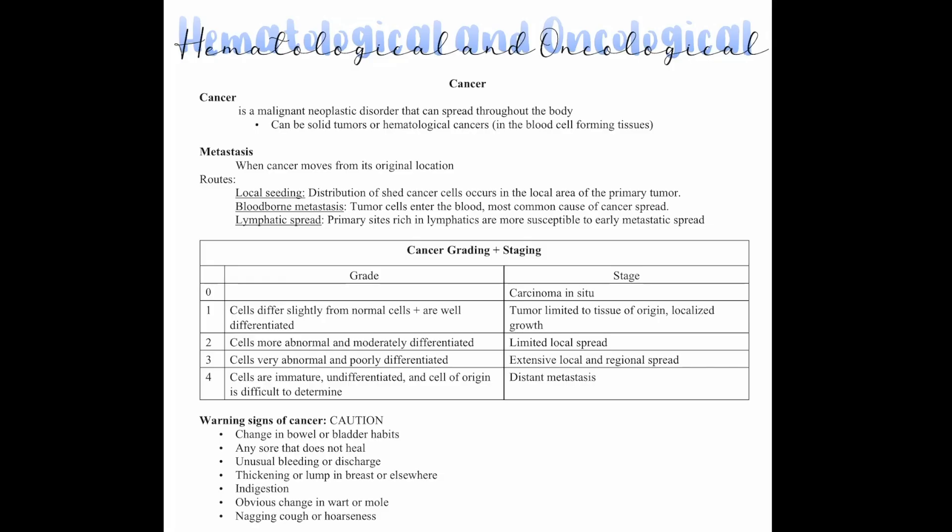Let's talk about hematological and oncology. First, we have cancer. This is a malignant neoplastic disorder that can spread throughout the body. It can be solid tumors or hematological cancers of the blood cells forming tissue.